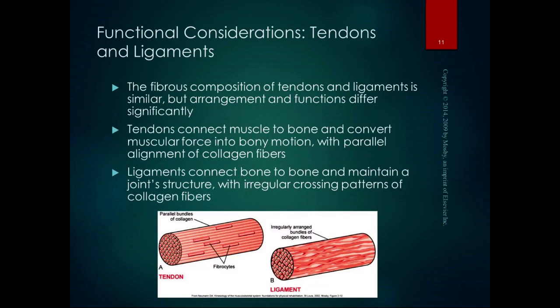Tendons and ligaments have a similar fibrous composition, but the arrangement and functions differ significantly. Tendons connect muscle to bone and convert muscular force into bony motion — they have a parallel alignment of collagen fibers, very neat and organized. Ligaments connect bone to bone and maintain joint structure — they have a more irregular crossing pattern of collagen fibers because they're dispersing forces. Under the microscope, tendons are more regular while ligaments show a crisscross pattern.